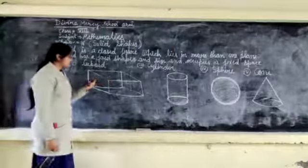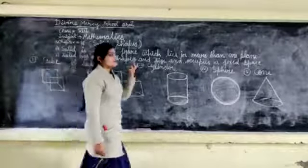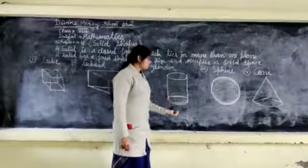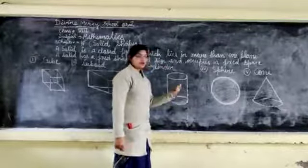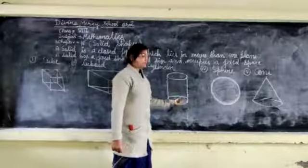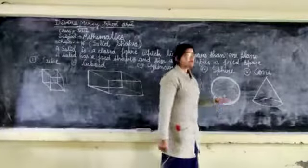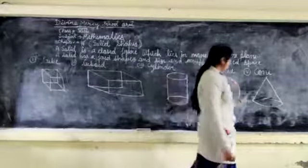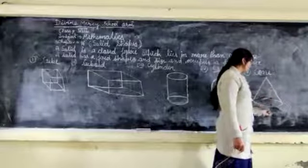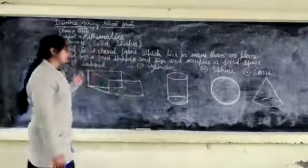A cuboid also has six faces — one, two, three, four, five, and six. So there are also six faces. Now for a cylinder: this is one flat face, this is also one flat face, but this is a curved face. So two flat faces and one curved face — the cylinder has three faces. A sphere has one curved face. A cone has two faces: one curved face and one flat face.